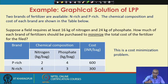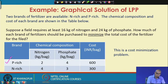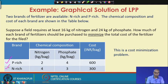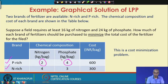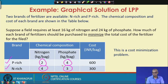There are two types of fertilizers: phosphorus rich (P-rich) and nitrogen rich (N-rich). Each bag of phosphorus rich fertilizer contains 2 kg of nitrogen and 4 kg of phosphate. Each bag of nitrogen rich fertilizer contains 4 kg of nitrogen and 3 kg of phosphate. Each bag of phosphorus rich fertilizer costs 600 rupees, and each bag of nitrogen rich fertilizer costs 300 rupees.